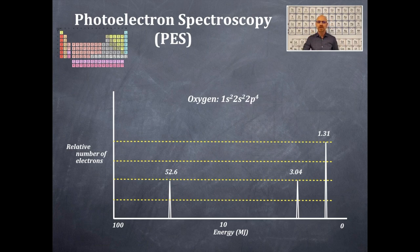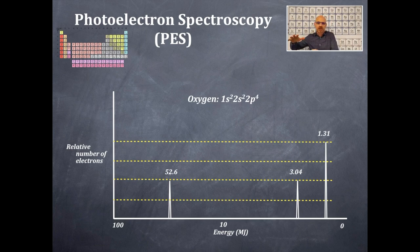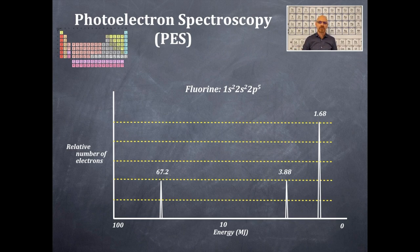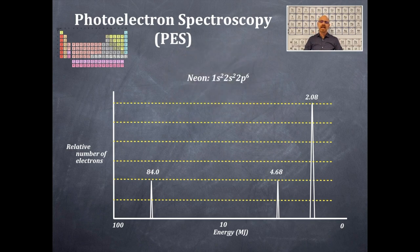Next is oxygen: 1s2, 2s2, 2p4. Everything shifts to the left — toward the nucleus, more difficult to remove. The 2s and 2p orbitals remain grouped together. Then fluorine, adding another electron: 2p5, giving a height of five there. The 1s2 peak keeps shifting toward 100 megajoules. Finally, neon completes this shell: 1s2, 2s2, 2p6. The peak heights correspond to the number of electrons in each subshell.